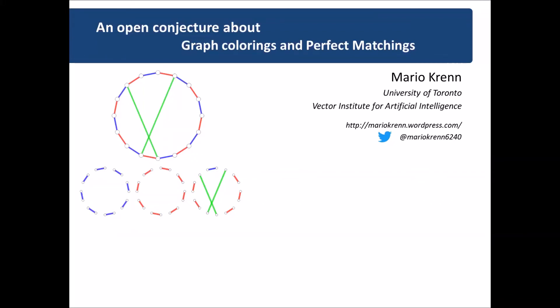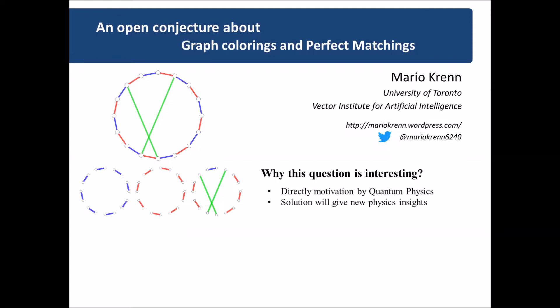Hello, my name is Mario Gren and I am a quantum physicist at the University of Toronto. I want to explain to you an unsolved question and conjecture in graph theory that involves graph colorings and perfect matchings. The question is directly motivated by quantum physics, and the solution will likely give us new understanding and insights about resources and the power of quantum interference.